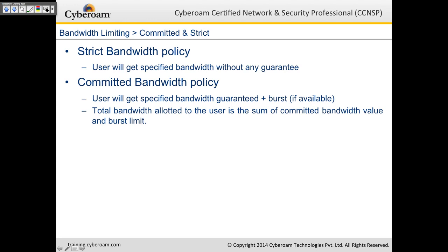There are two types of bandwidth policies. One is the strict bandwidth policy and the other is the committed bandwidth policy. In strict bandwidth policy, the user would always get the specified bandwidth without any guarantee. If you assign 256 kbps to a user, they will be getting around 256 kbps, but there is no guarantee — they might get less if some other traffic with higher priority is contesting for bandwidth.